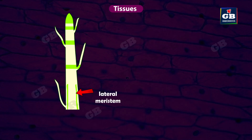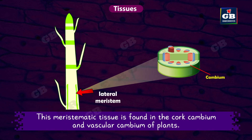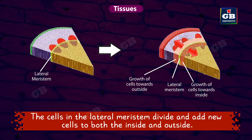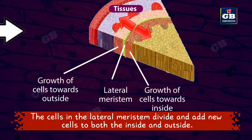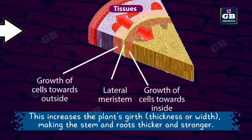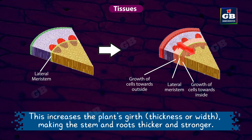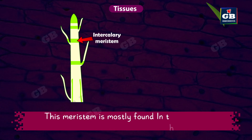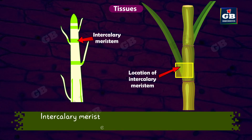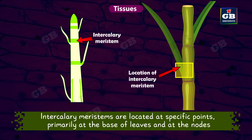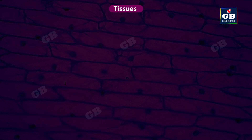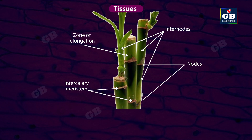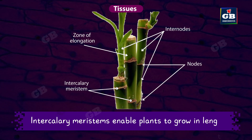Lateral meristem: This meristematic tissue is found in the cork cambium and vascular cambium of plants. The cells in the lateral meristem divide and add new cells inside and outside, increasing the plant's girth — meaning thickness or width — making the stem and roots thicker and stronger. Intercalary meristem: This meristem is mostly found in monocot plants like grass, located at specific points, primarily at the base of leaves and at the nodes where leaves attach to the stem. Intercalary meristem enables plants to grow in length.